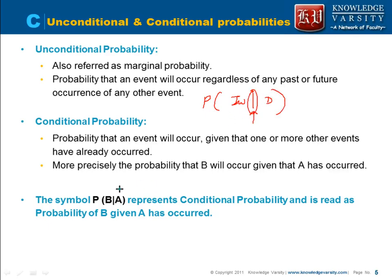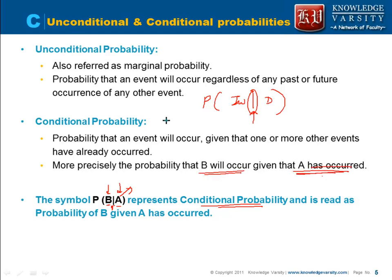This is called 'given.' In terms of events B and A, we use the symbol B given A. This represents the conditional probability of B dependent on A — given that A has occurred, what is the probability that B is going to occur? This is your conditional probability: one event is dependent or conditional on another event.